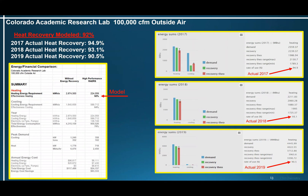Let's look at some model results versus actual post-occupancy results. This is an academic research lab in Colorado with 100,000 CFM of outside air. The model calculated 92% annual heating effectiveness, meaning 92% of the annual heating requirement comes from recovered energy. Actual post-occupancy results: 2017 — 94.9%, 2018 — 93.1%, and 2019 — 90.5%. So pretty close to the model.